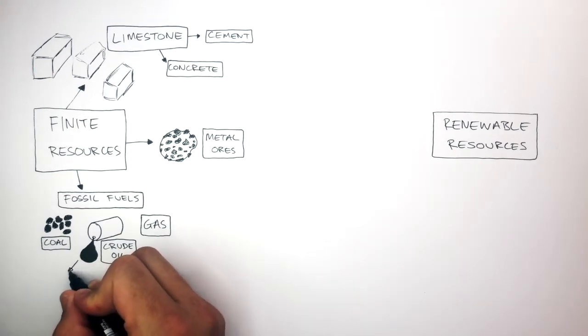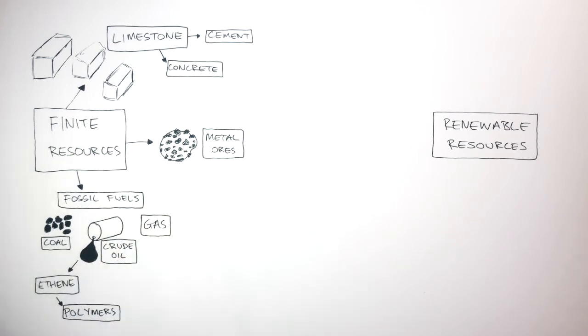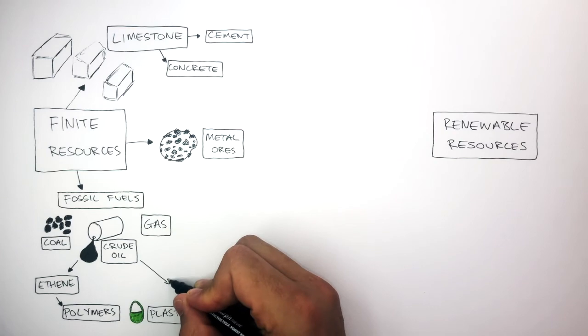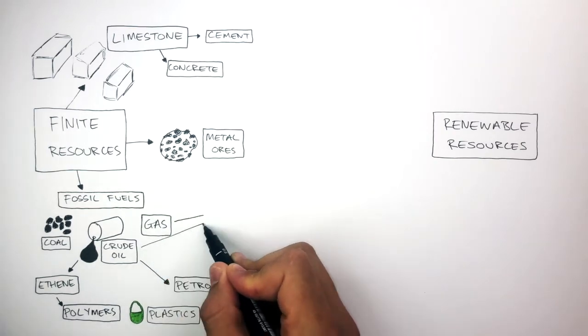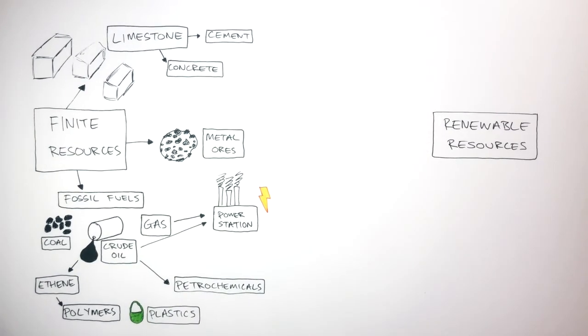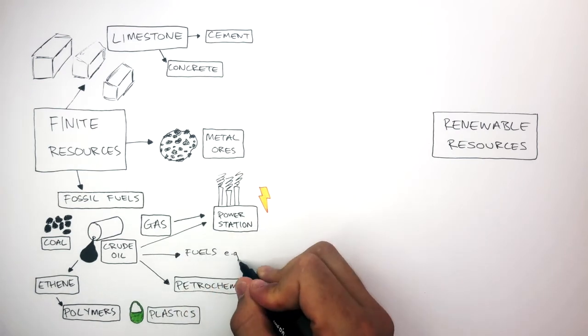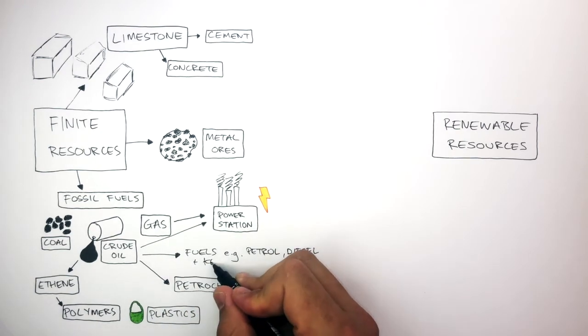From this crude oil, we can obtain ethene, which is used to make polymers, which we use for many different things in life, such as plastics. And crude oil is also used to make petrochemicals. The combustion of fossil fuels in power stations can also be used to generate electricity, which powers homes and businesses. And finally, crude oil can be separated into its different fractions, where they can be used as fuels, for example, petrol, diesel, and kerosene.